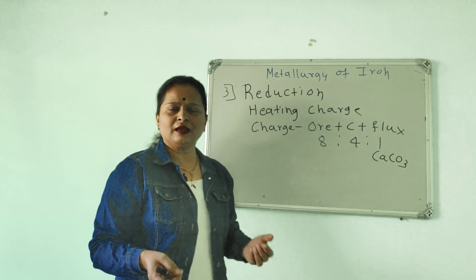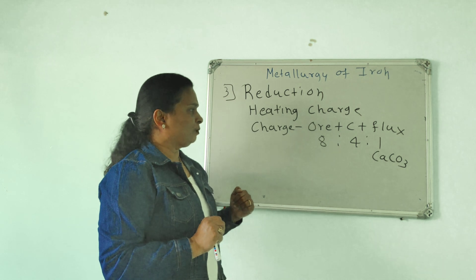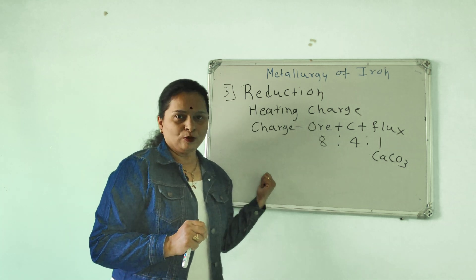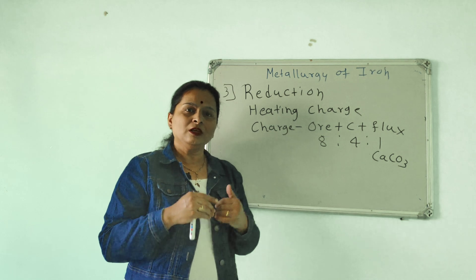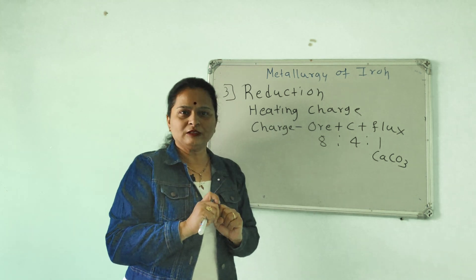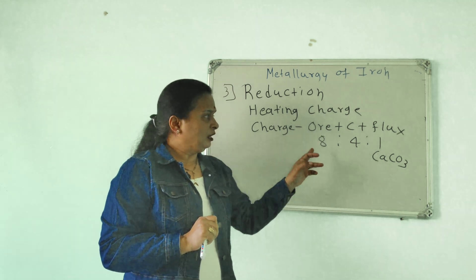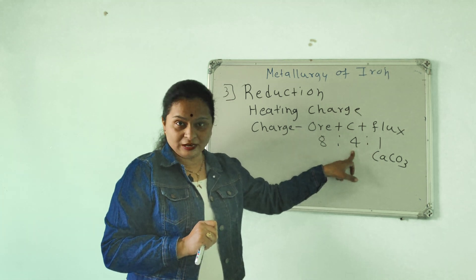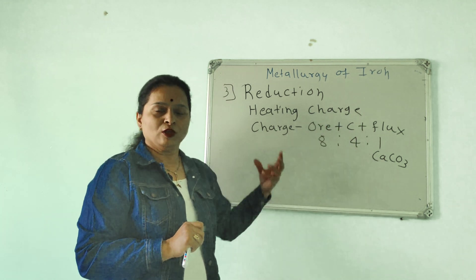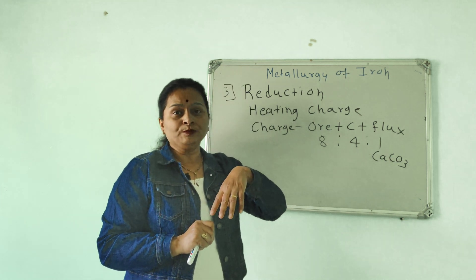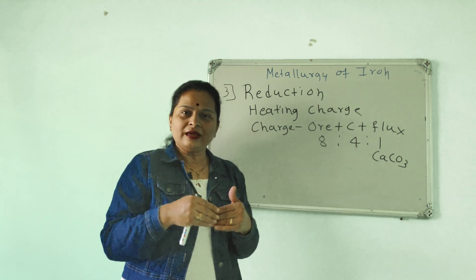This process produces impure iron, and then the process of refining — purification of metal — is done to get extra pure metal. In the blast furnace, there is a cup and cone arrangement through which the charge is introduced.